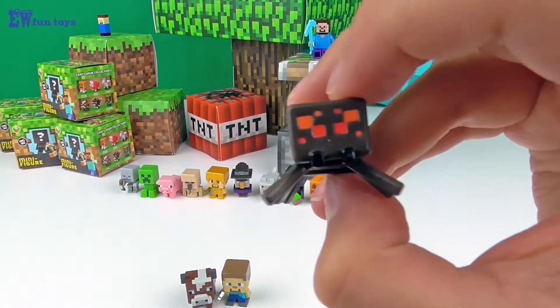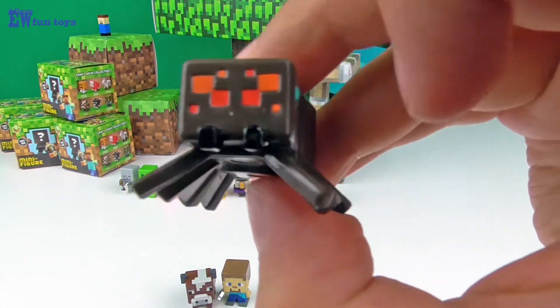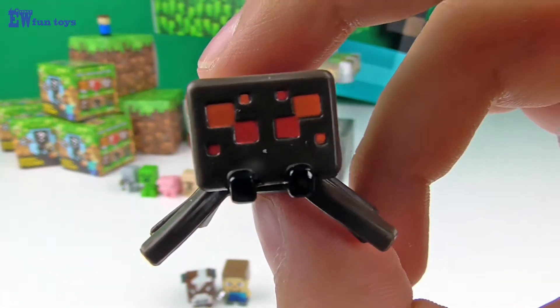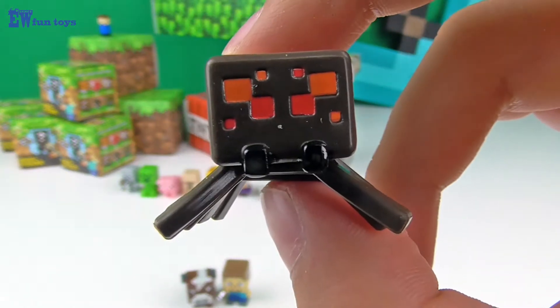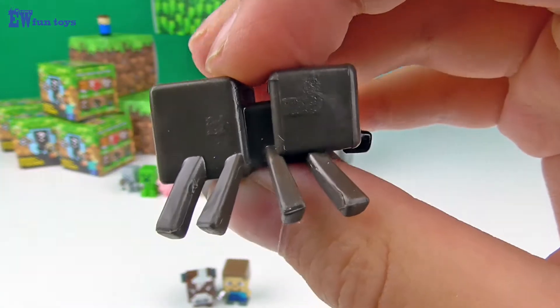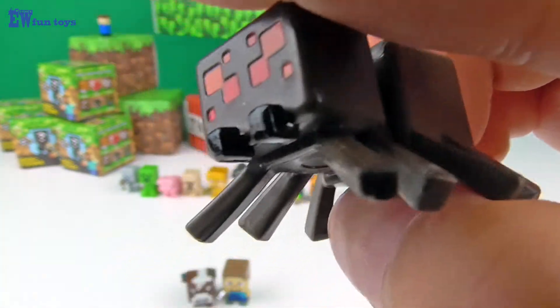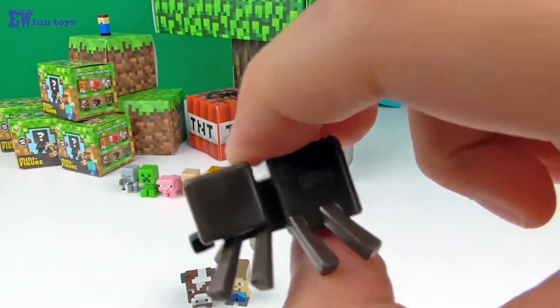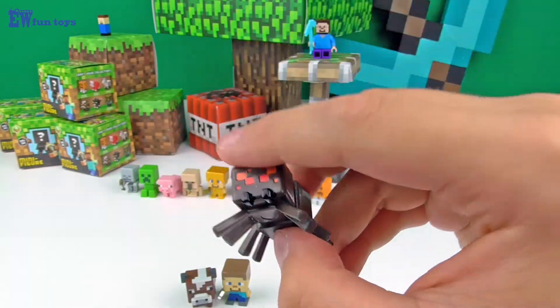Spider. These creatures can climb blocks. They spawn in a light level of seven or less. They become hostile at night time and they remain friendly in daytime unless you attack them. They drop string for making bows and wool.